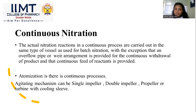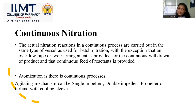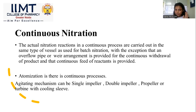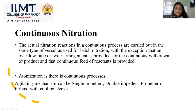The second process equipment type is continuous nitration, which uses similar equipment but with continuous withdrawal of product and continuous feed of reactants. Atomization is a continuous process. Agitation mechanisms can include single impeller, double impeller, propeller, or turbine with cooling sleeves.